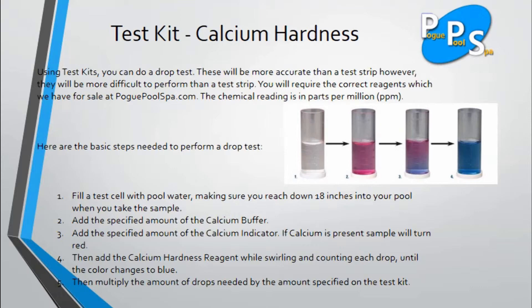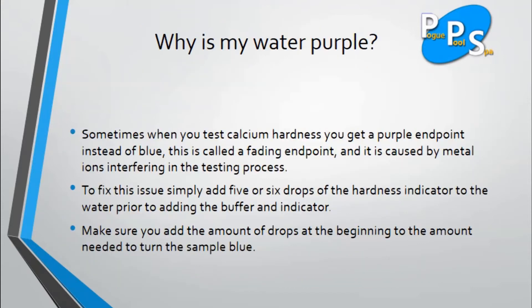Step 2: Add the specified amount of the calcium buffer. Step 3: Add the specified amount of the calcium indicator. If calcium is present, the sample will turn red. Then add the calcium hardness reagent while swirling and counting each drop until the color changes to blue. Then multiply the amount of drops needed by the amount specified on the test kit.